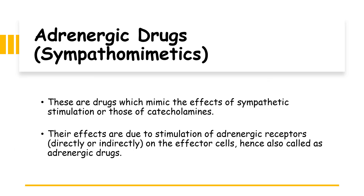How do we define adrenergic drugs or sympathomimetic drugs? Sympathomimetic drugs are drugs which mimic the effects of the sympathetic nervous system — the fight-or-flight response — or those of catecholamines. Catecholamines refers to norepinephrine, epinephrine, dopamine, and isoproterenol. Their effects are due to the stimulation of adrenergic receptors, either directly or indirectly on the effector cells, hence they are also called adrenergic drugs.